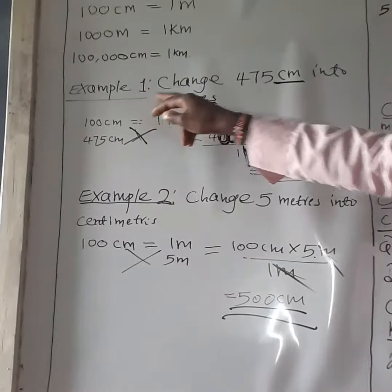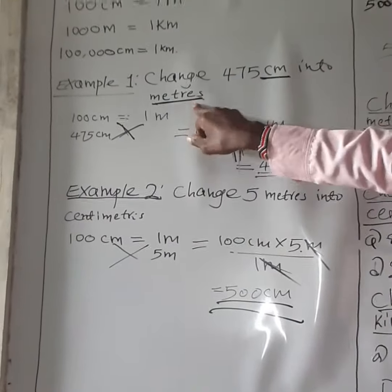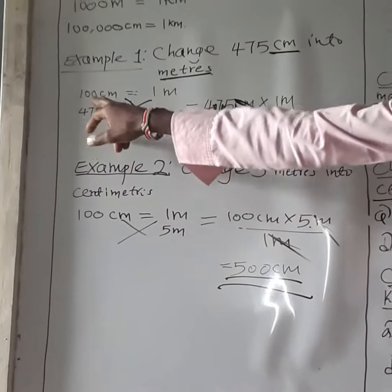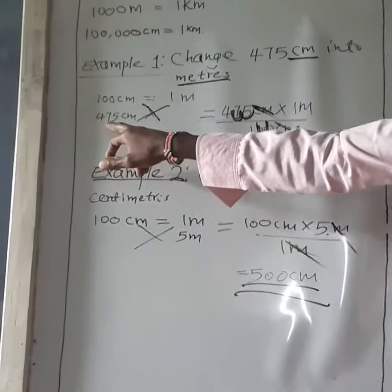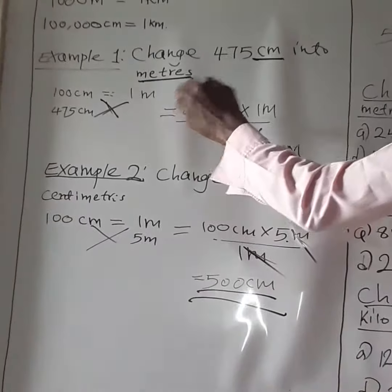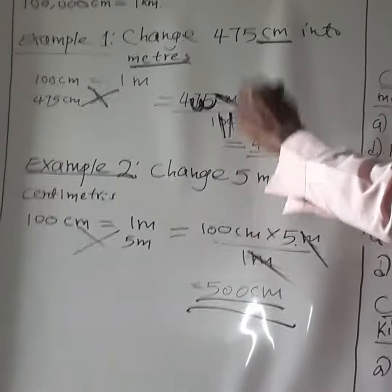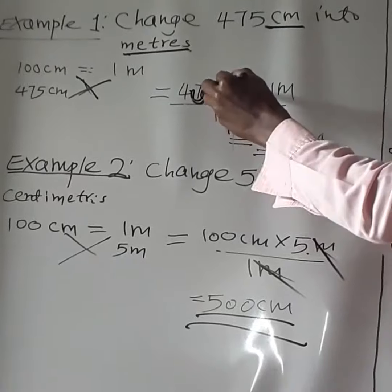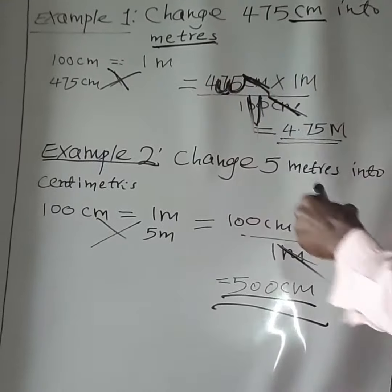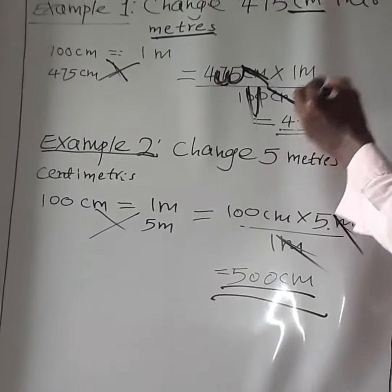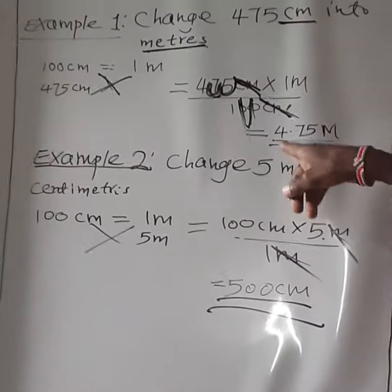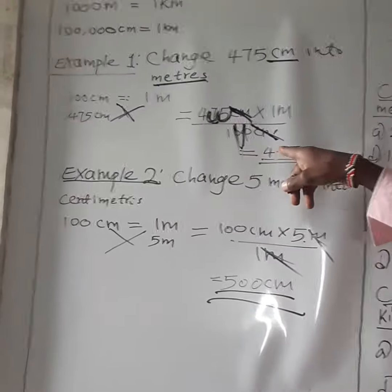In Example 1, change 475 centimeters into meters. You can go back to the relationship between centimeters and meters — 100 centimeters is equal to 1 meter. Now, what are 475 centimeters? You cross-multiply: 475 centimeters times 1 meter, all over 100 centimeters. You cancel centimeters with centimeters. You have two zeros below, so you cancel two zeros, which creates two decimal places. Then you will have 4.75 meters. So in short, when you convert 475 centimeters into meters, you will have 4.75 meters.